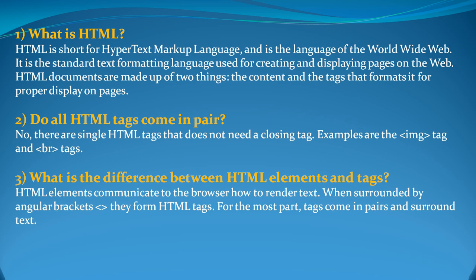What is the difference between an element and a tag in HTML? Basically, an element communicates to the browser how to render the text. But when it is surrounded with angular brackets, they form HTML tags. HTML tags generally come in pairs and they have text. An HTML tag is what allows you to see the output — for example, if you want a button, you add the word 'button' in angular brackets to make it a tag.